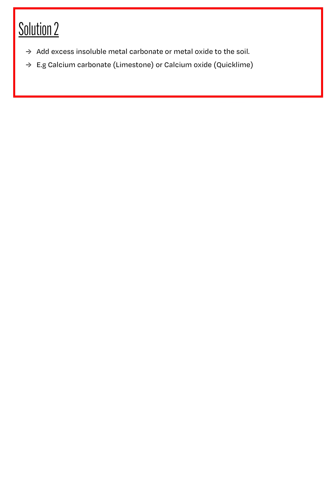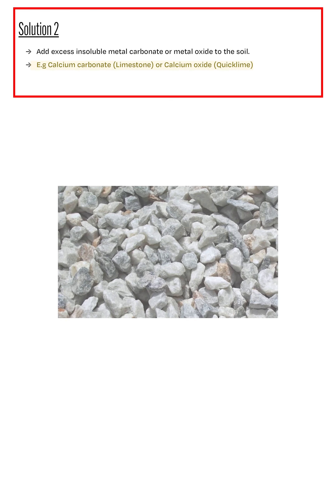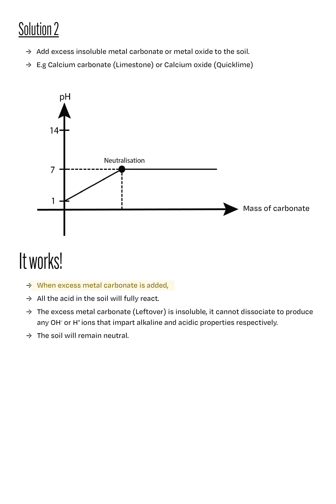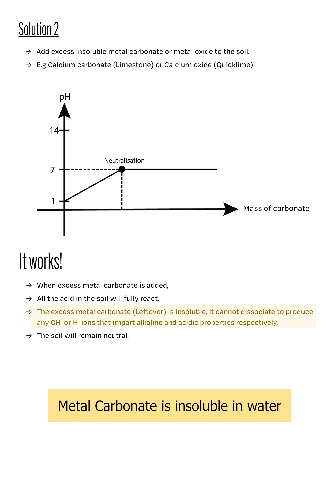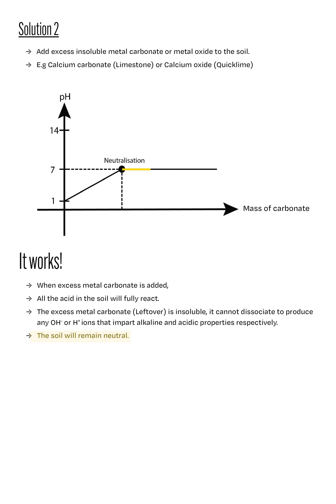Now consider scenario 2. In this scenario, the farmer chose to add excess metal carbonate to the acidic soil instead. A good example is to add excess calcium carbonate, also known as limestone. The excess calcium carbonate added will fully neutralize all the acid found in the soil. And we need not worry about any leftover calcium carbonate because this compound is insoluble in water. Being insoluble, calcium carbonate will not dissociate in water to produce any hydroxide or hydrogen ions that impart alkaline and acidic properties respectively. Thus the pH of the soil will remain neutral even after all the acid has been neutralized.